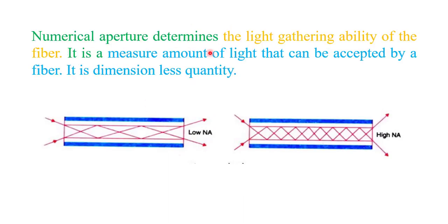Numerical aperture defines the light gathering ability of the fiber. It is a measure of the amount of light that can be accepted by a fiber, and it is a dimensionless quantity. In the diagram, a fiber with low NA gathers less light compared to a fiber with high NA, which keeps more light within the optical fiber.